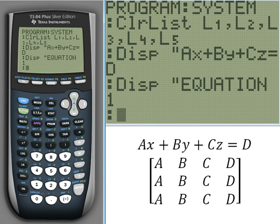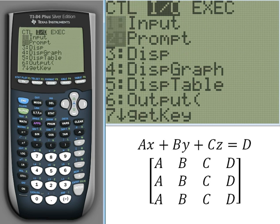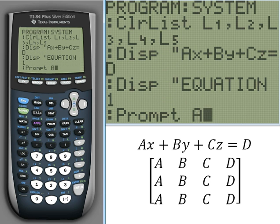Now that we have that all set up, we can go ahead and prompt the user for the four variables: A, B, C, and D. So go over to prompt A, B, C, D, all on one line.